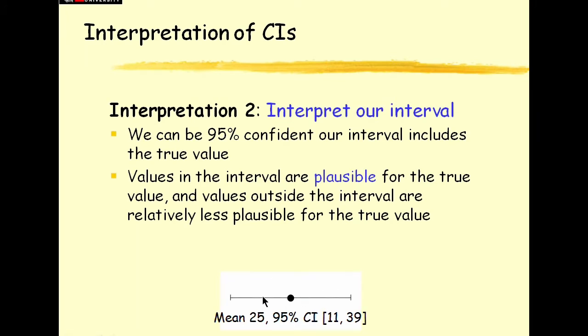If it misses it probably only misses by a small amount but most likely the true value is in our interval. Values in the interval, anything from 11 to 39 are quite plausible, quite reasonable guesses for the true value.